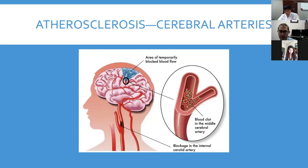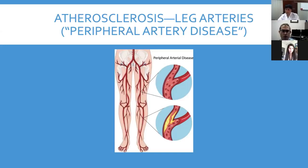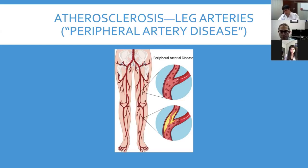A similar process can happen in the arteries bringing blood flow to your brain. You can develop the same kind of plaque causing narrowings or an acute clot, and this is when we get what we call a stroke, or an ischemic stroke to be more precise. When atherosclerosis affects the arteries of your legs, we call it peripheral artery disease, or PAD.